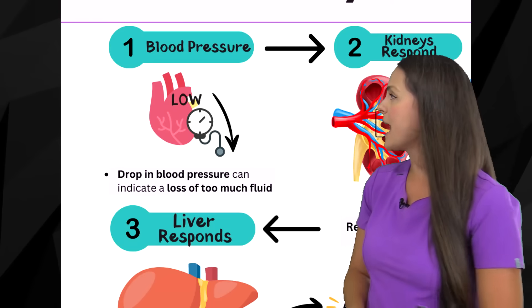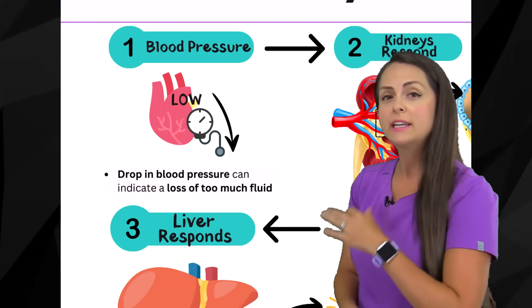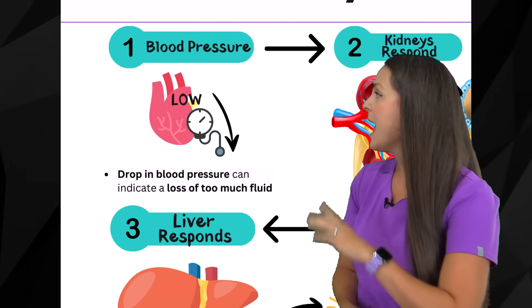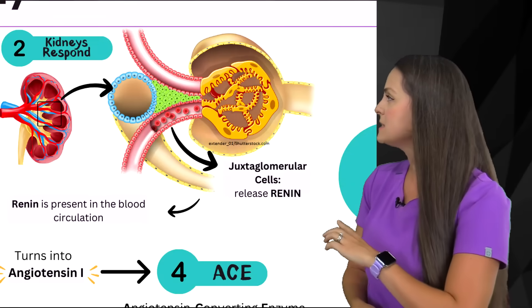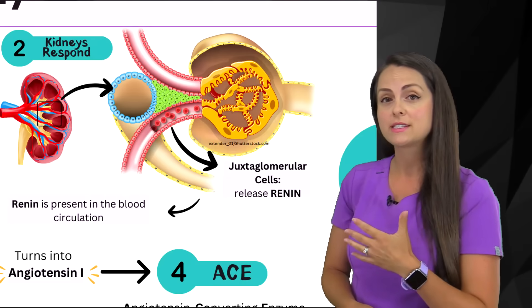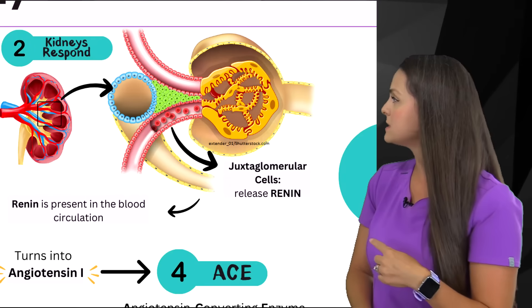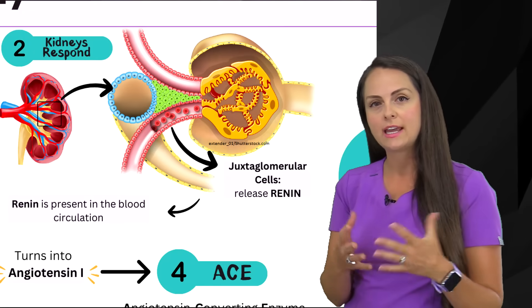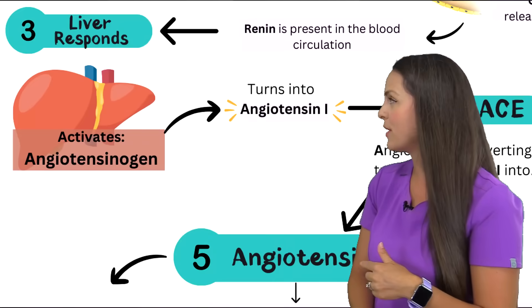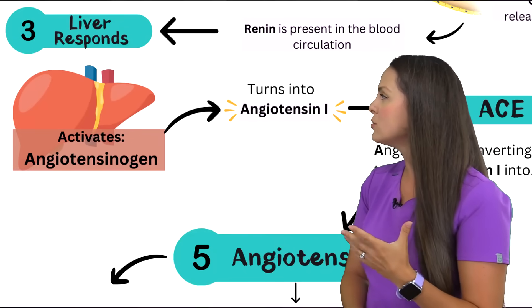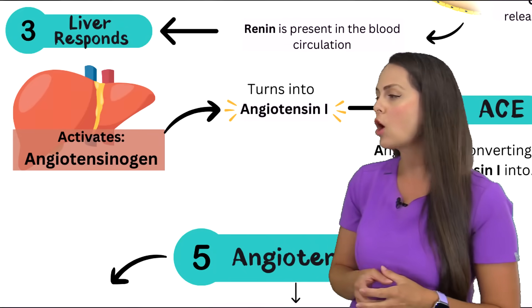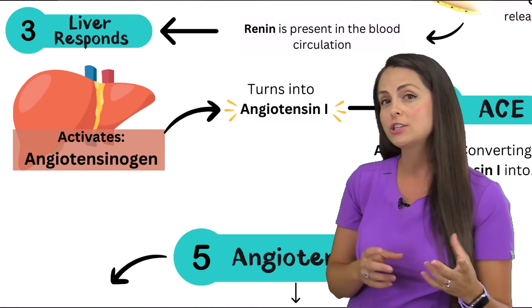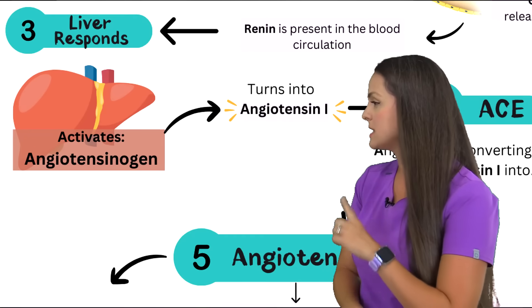So how this system works is that your blood pressure drops. That drop in blood pressure indicates to the body that we have a loss of fluid, so we've got to do something about this. This causes the kidneys to respond, specifically the juxtaglomerular cells inside that kidney, and they are going to release a substance called renin. Whenever renin is present in the blood circulation, this causes the liver to respond, and it is going to activate a substance called angiotensinogen, which then turns into a substance called angiotensin 1.